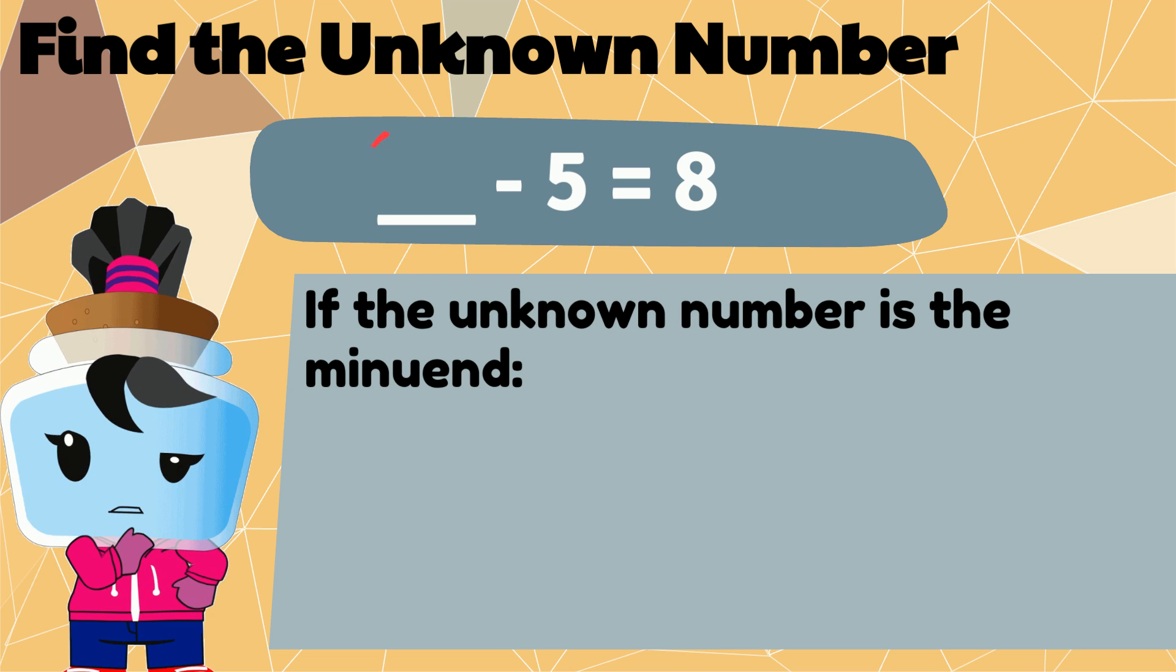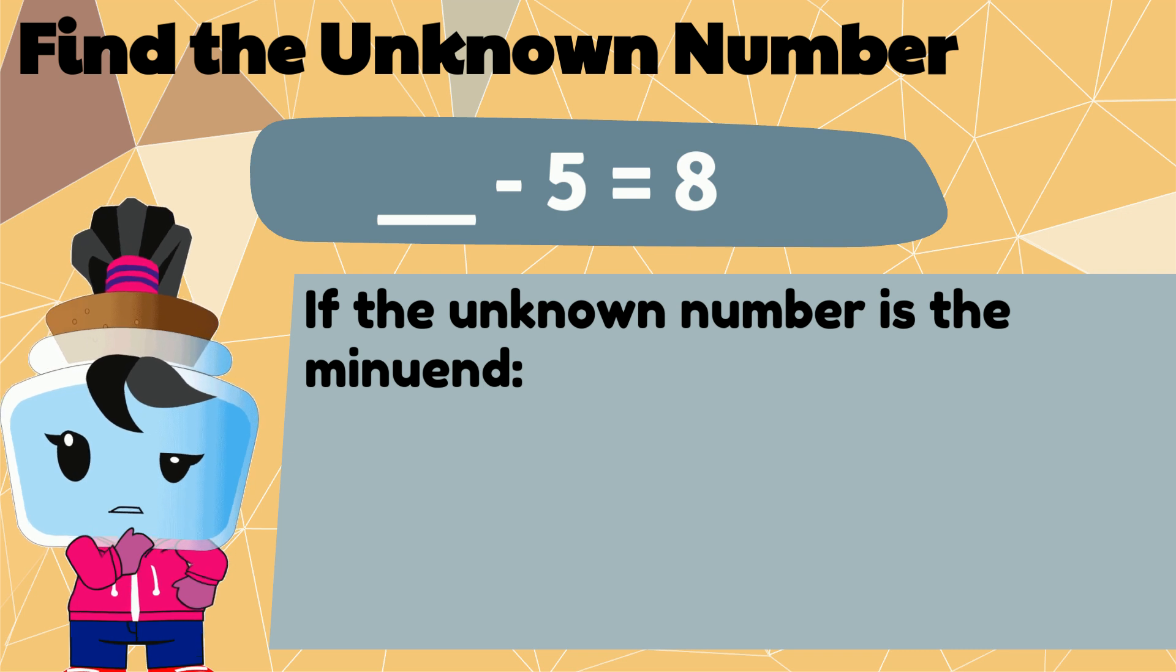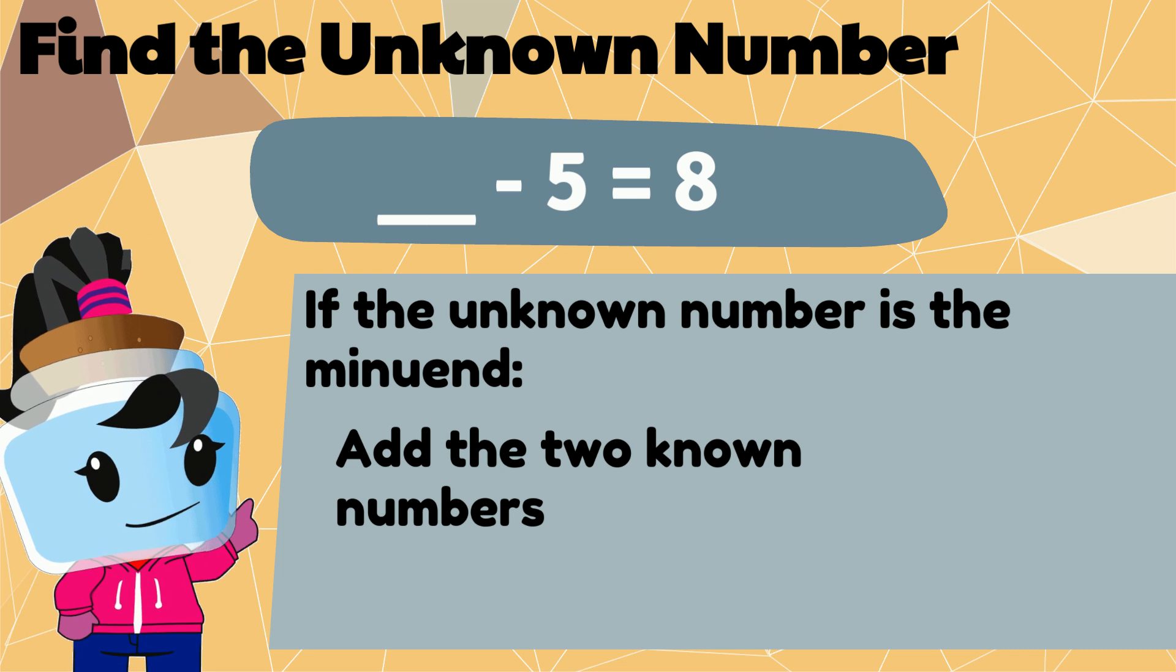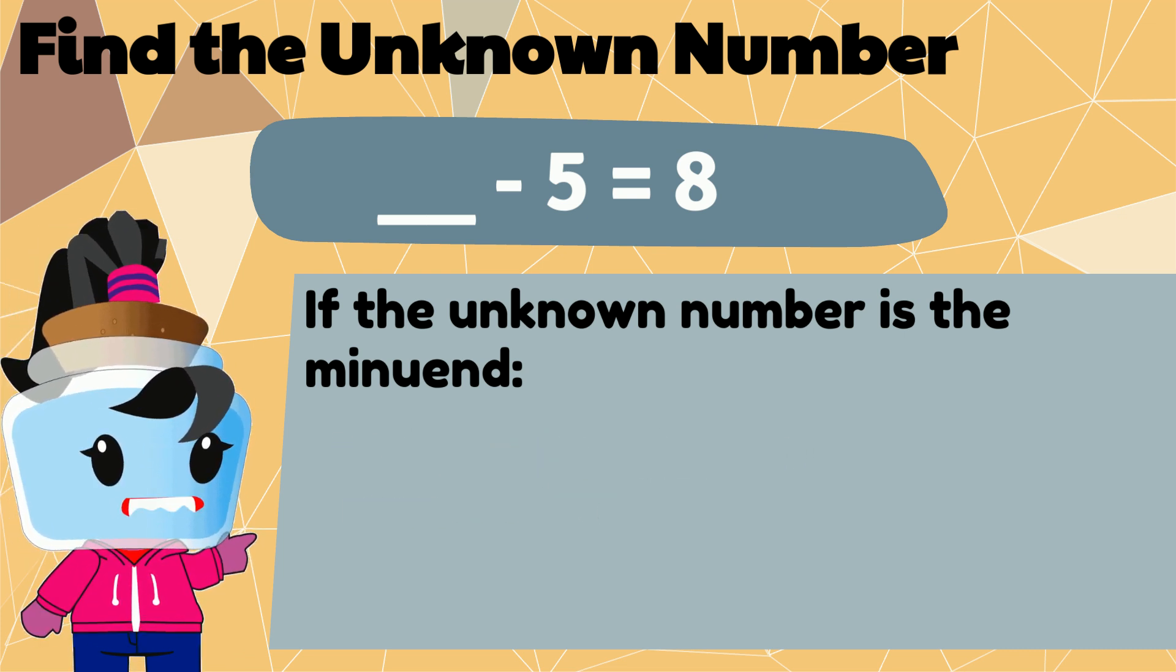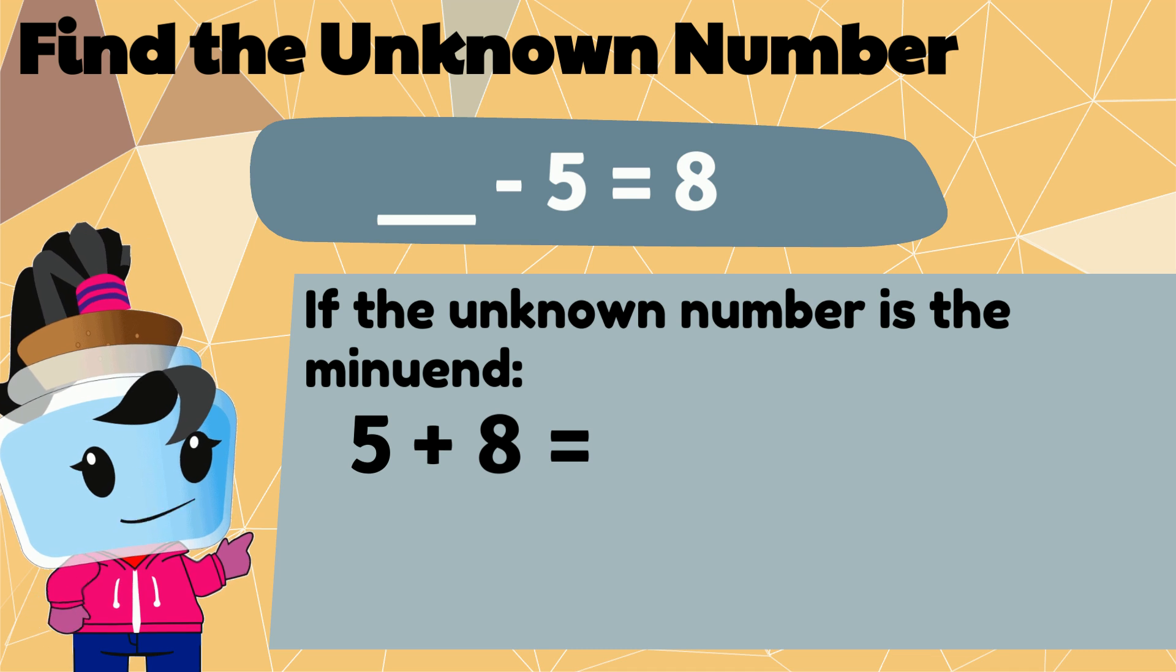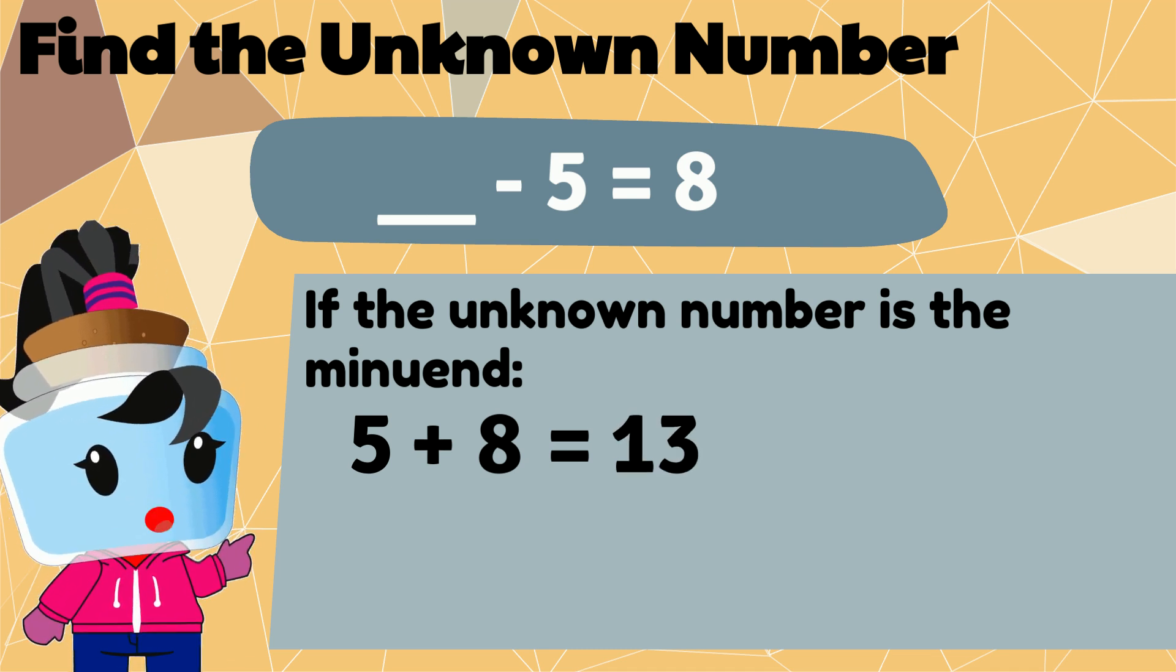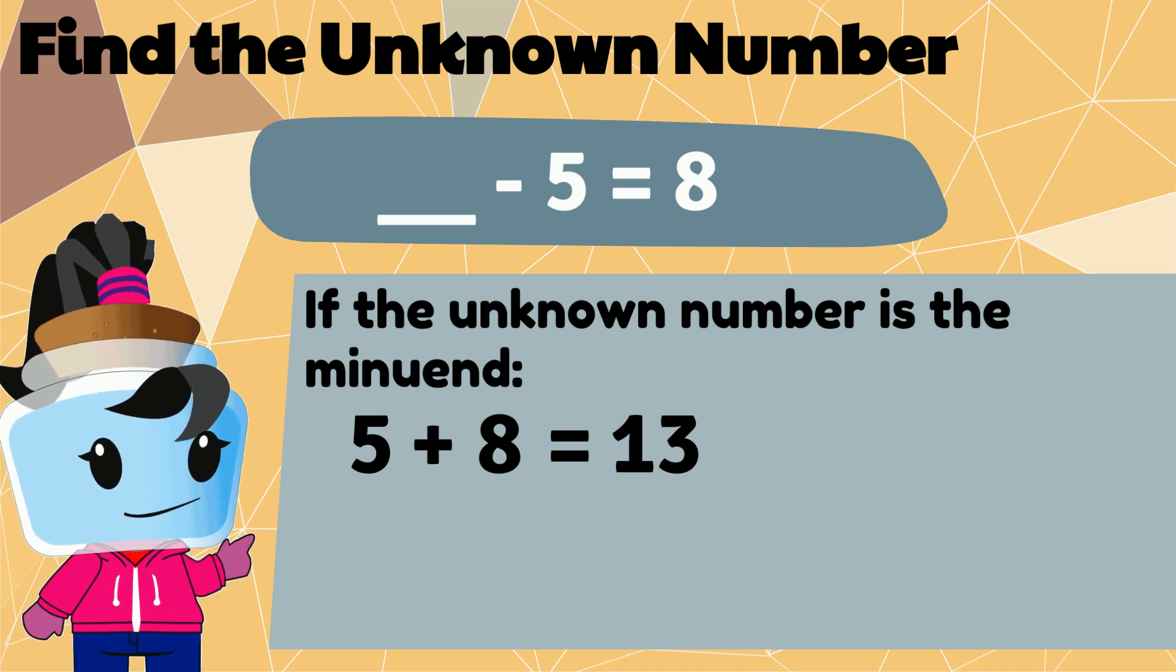If the minuend is the unknown number, or the value you are subtracting from, we can simply add the two known values to find out what the minuend is. 5 plus 8 is equal to, you got it, it's 13. So the unknown number in this equation is 13.